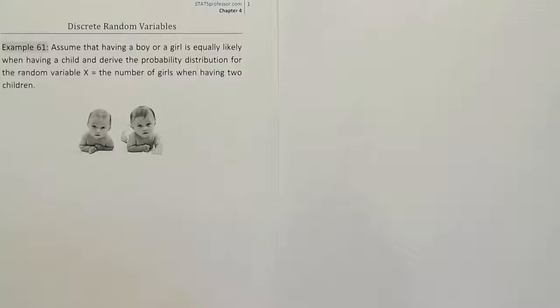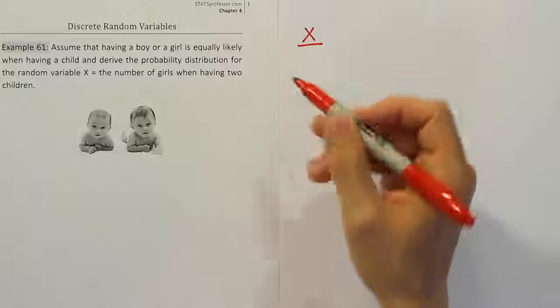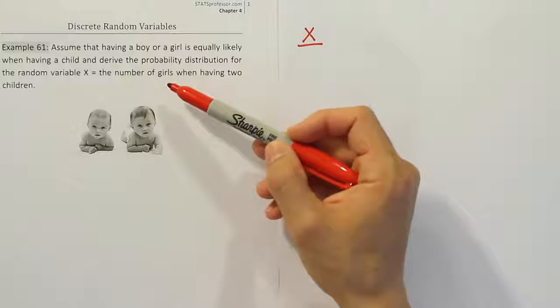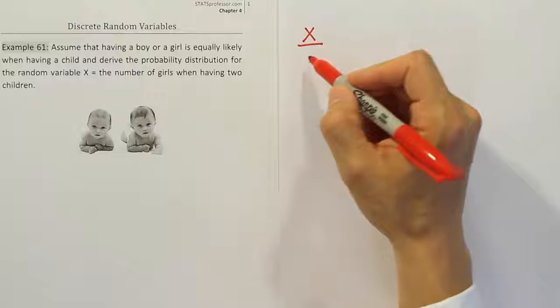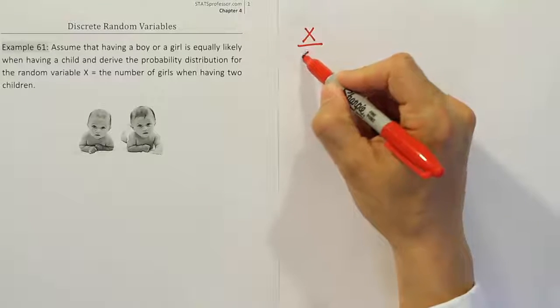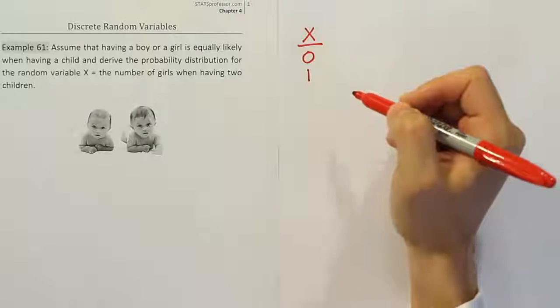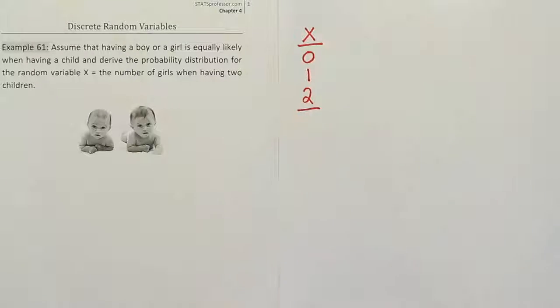We're going to create a table that lists the number of outcomes that are possible for X. If we create a column called X, let's think about it. If you have two children and X represents the number of girls that you can have, what are the possibilities? Well, there's a chance that you have no girls out of two kids, or you could have just one girl out of two kids, or you could have two girls out of two kids—both children girls.